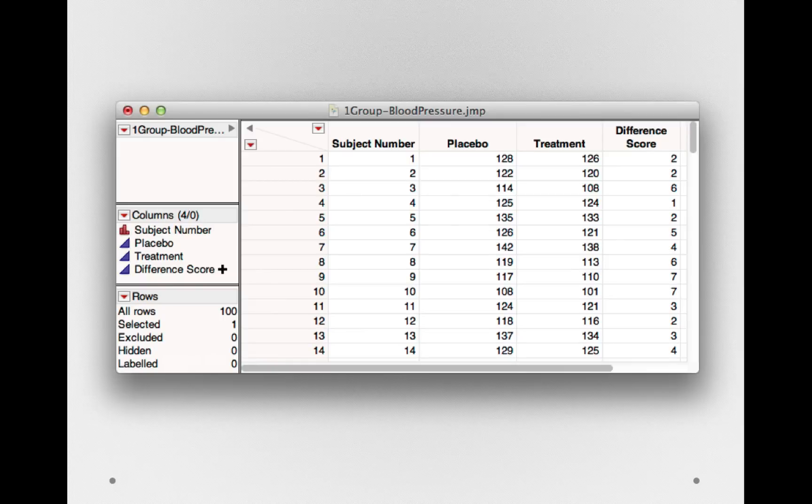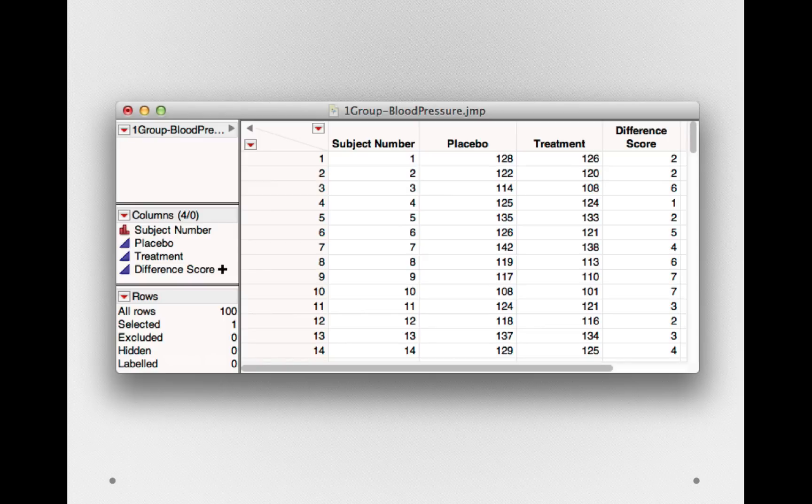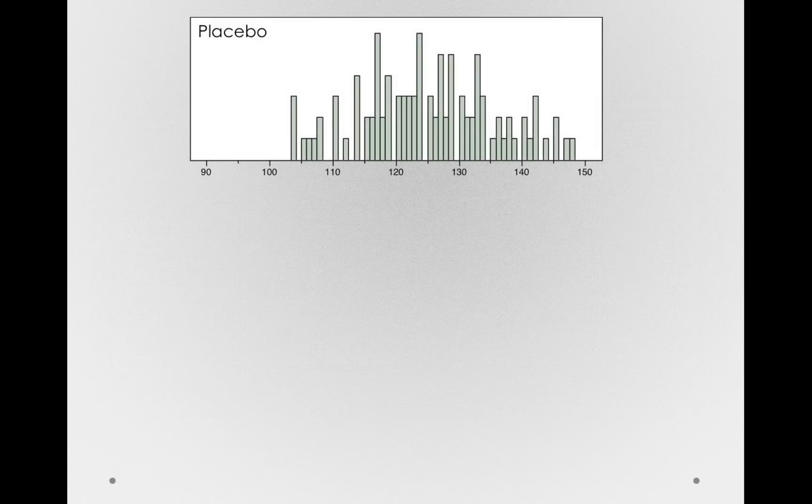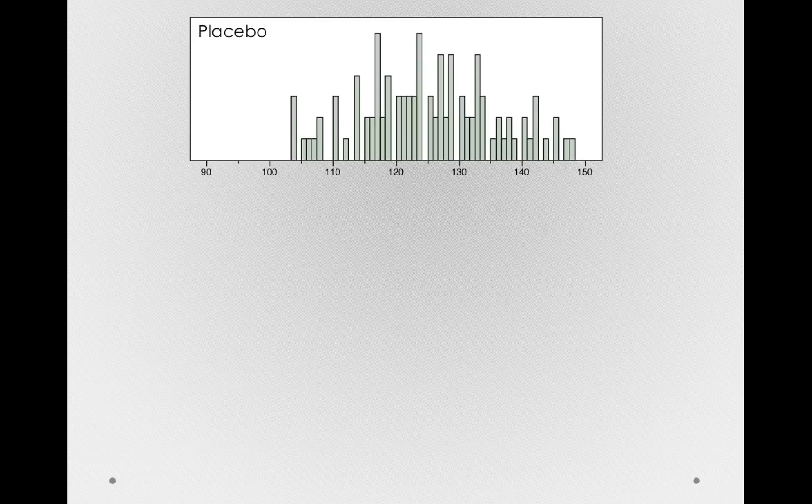If I go over to that one group blood pressure JUMP file, the one we use for our dependent measures test, let's look at the variability in the placebo column and the treatment column and compare that to the difference score column. Let me actually give you histograms for each of these. First, the histogram for the placebo column. Notice individuals are pretty widely spread, from around 100 all the way up to 150.